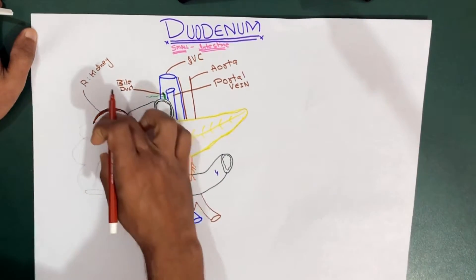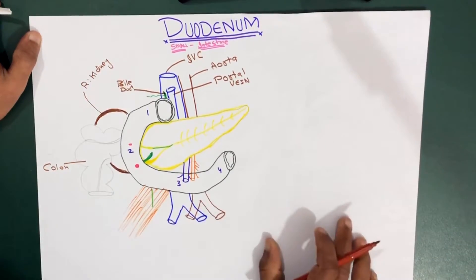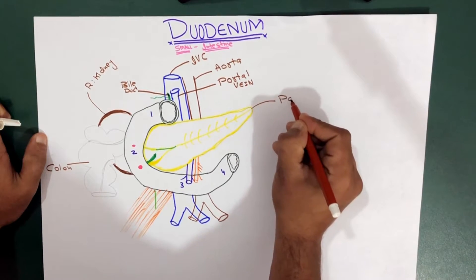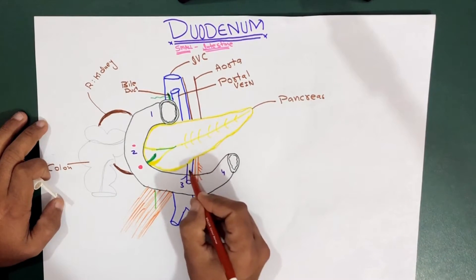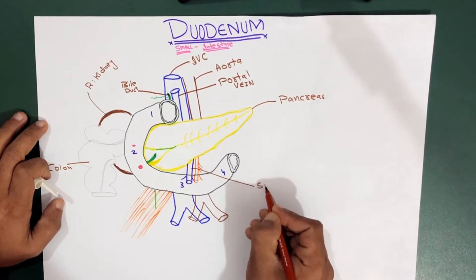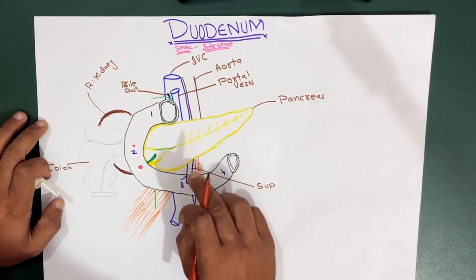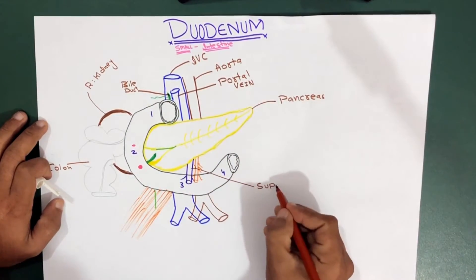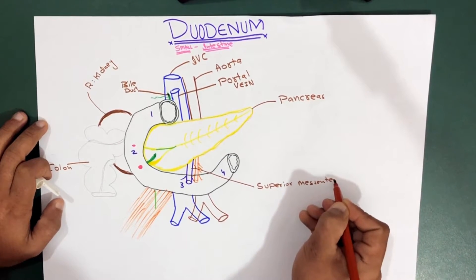This is the transverse colon, and here is your ascending colon — we'll just call it the colon. This big leafy structure in yellow is your pancreas. These vessels here are the superior mesenteric artery and superior mesenteric vein — together we call them the superior mesenteric vessels. The superior mesenteric artery is actually a branch of the abdominal aorta.